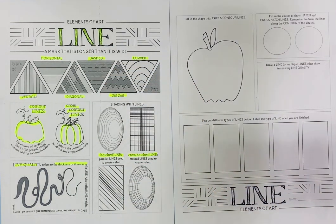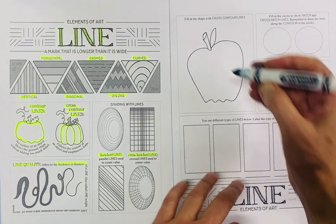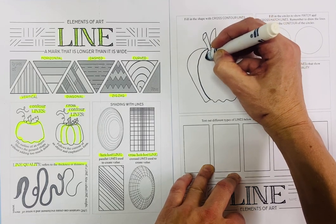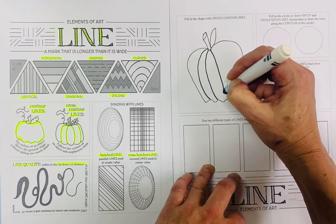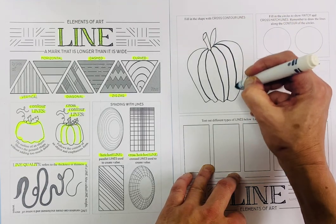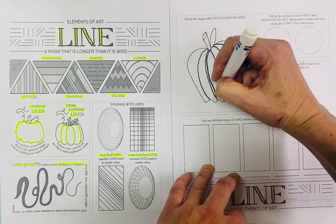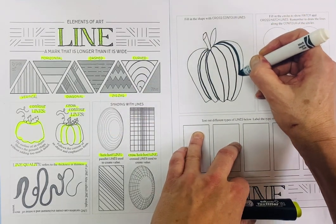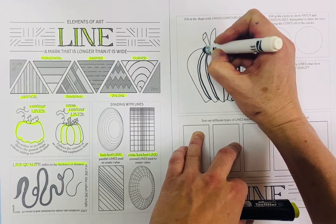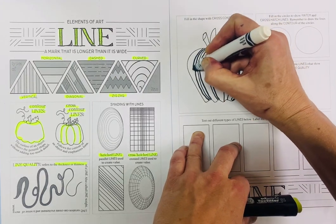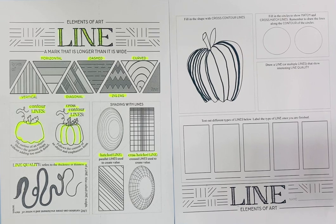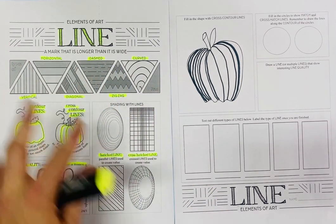So now we're moving on to what you're going to be practicing yourselves. We've got this shape over here and you're going to fill it in with cross contour lines. Remember, a cross contour line follows the contour of something. I'm actually going to vary my line — make it a little bit thicker there, and make these lines really close together over here. See, this immediately creates an interesting effect. You're going to do different types of line and make it original — you don't have to copy mine, you've got lots of ideas over here.